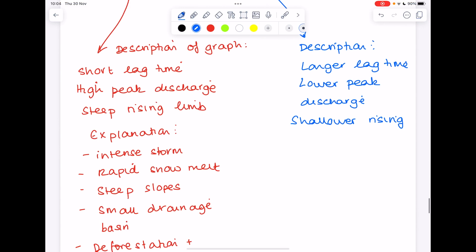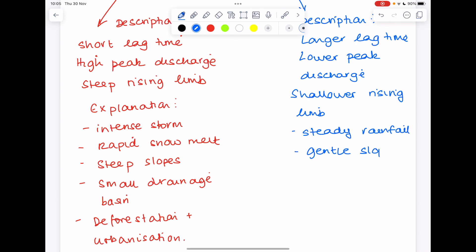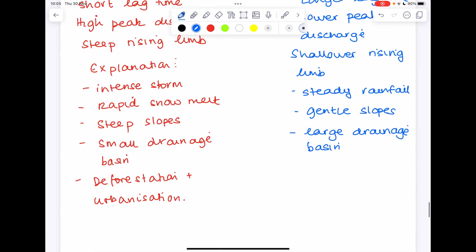So the reasons for that subdued storm hydrograph will be opposite to the ones we talked about in the flashy one. So rather than an intense storm, we would talk about steady rainfall, gentle slopes, large drainage basins, lots of vegetation. Because remember that vegetation will intercept that rainfall and delay that water reaching the rivers.